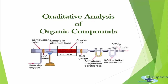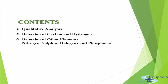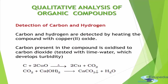First of all, what do we mean by qualitative analysis? In qualitative analysis, we try to find out which elements are present in the organic compound. In this video we will see the techniques to detect carbon and hydrogen, and then how to detect all other elements present in the organic compound like nitrogen, sulfur, halogen, or phosphorus.